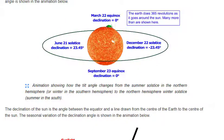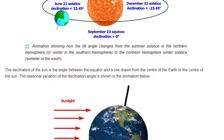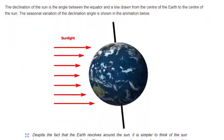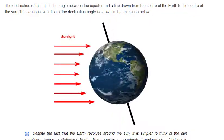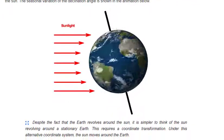The declination of the sun is the angle between the equator and a line drawn from the center of the earth to the center of the sun. The seasonal variation of the declination angle is shown in the animation below.